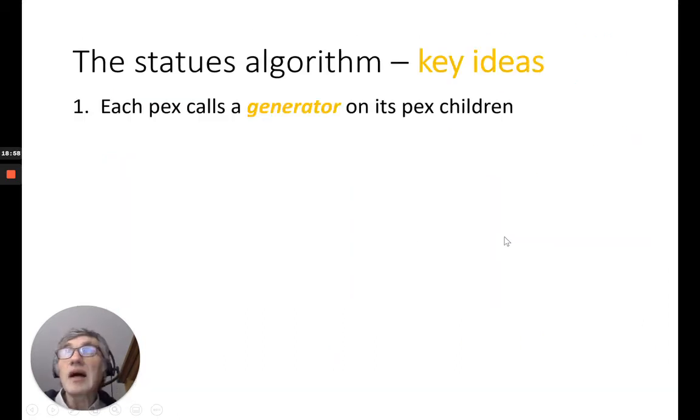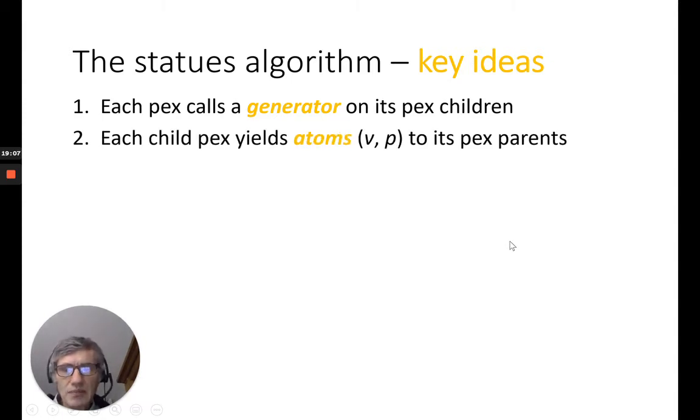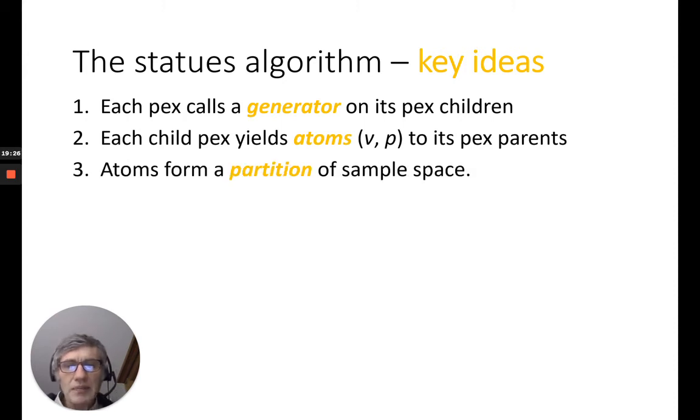OK, some key ideas about this algorithm. Each PEX calls a generator on its PEX children. Each child PEX yields atoms to its PEX parents. So, what is an atom? It's basically, it's a tuple VEP with a value and the probability of this value. And all these atoms form a partition of the sample space. So, it means that you can receive several atoms for the same value with different probabilities. But because it's a partition, you can add them together, you can add the probability together without error because it's a partition. And because it's a partition also, you are sure that you don't miss any case. So, that's the contract we want to put on the concept of atom. It's a core element of the algorithm.